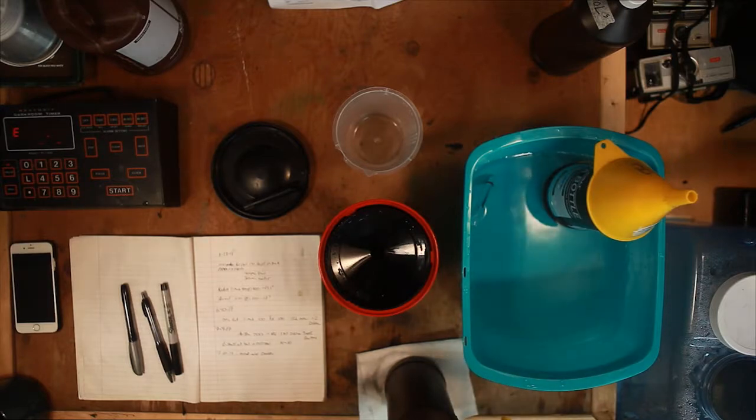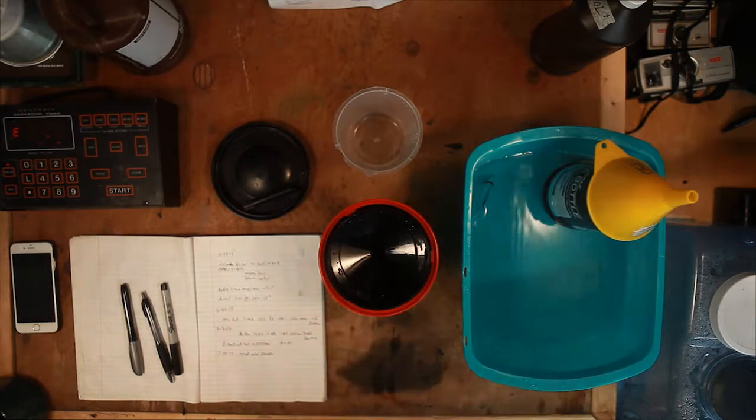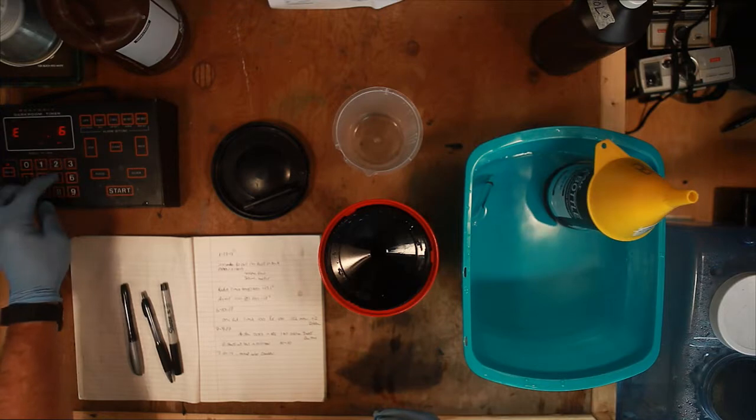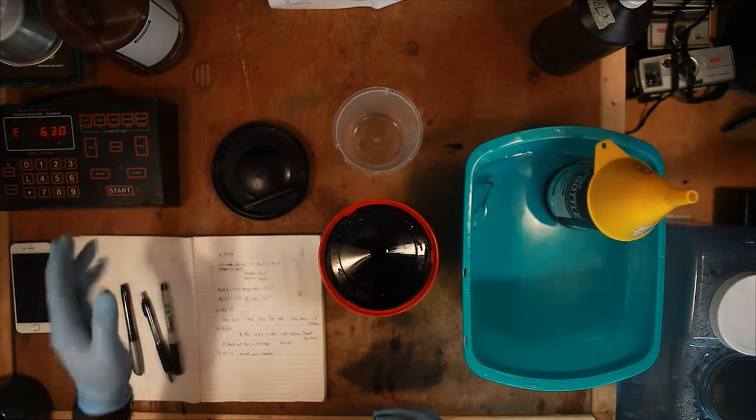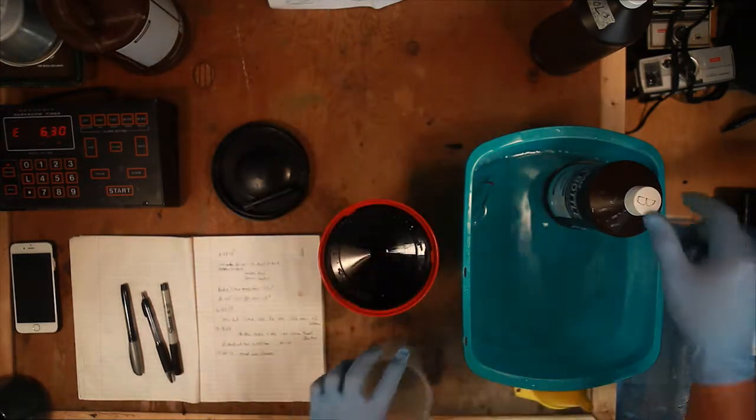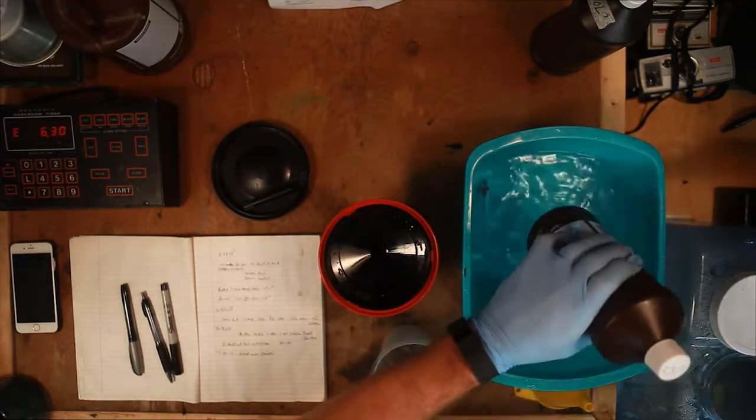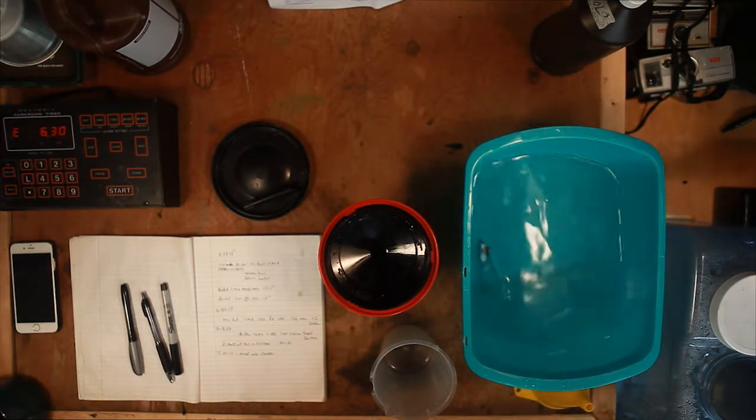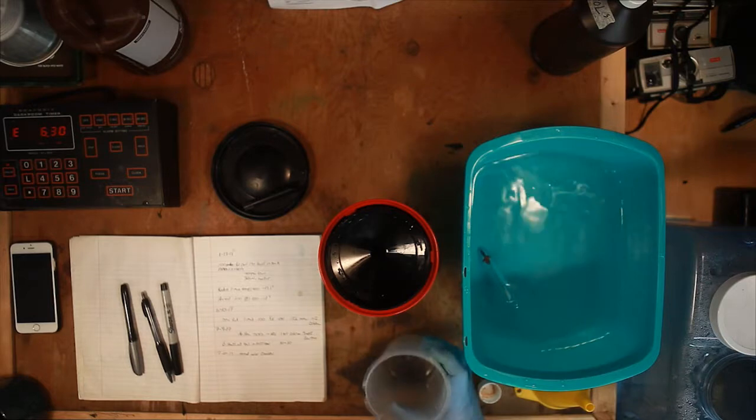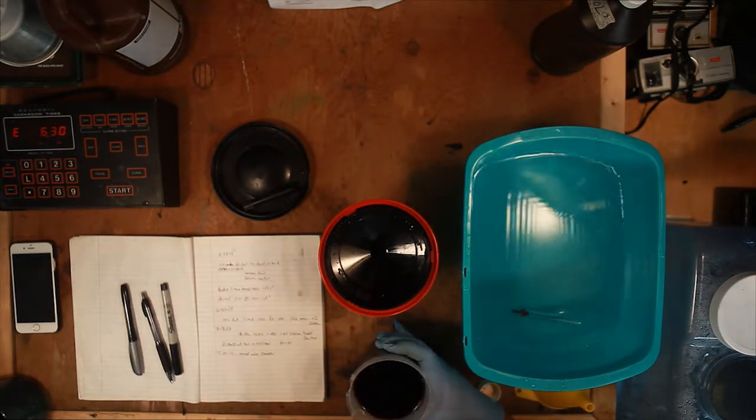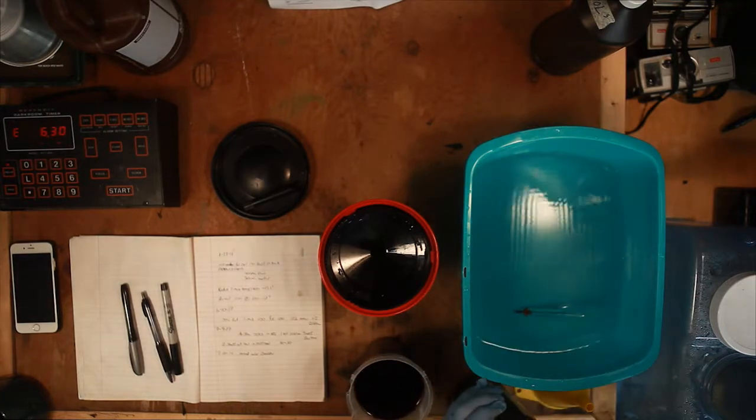Now we're going to move on to our blix. First I'm going to seal this and set it off to the side. For our blix we're going to do six and a half minutes, longer than we did with our developer. Same deal, we're going to take it out of our water bath where we're keeping at temperature and pour out 500 milliliters.